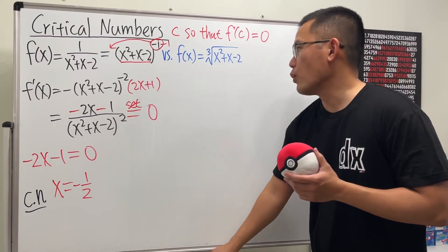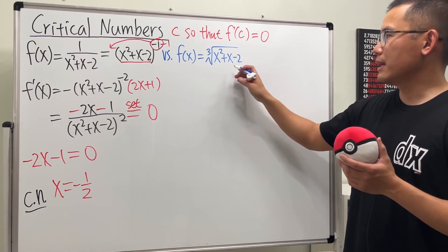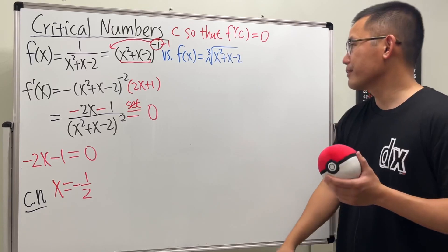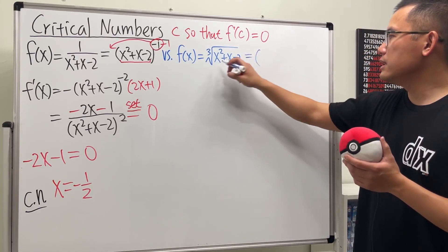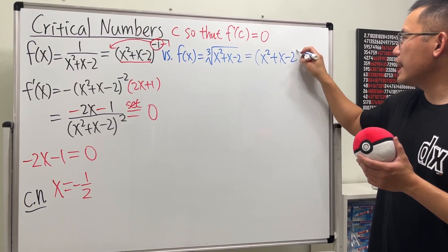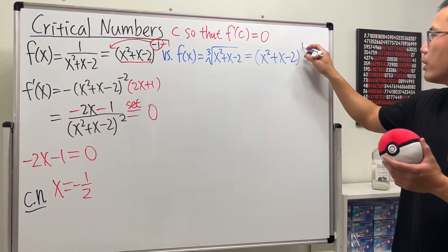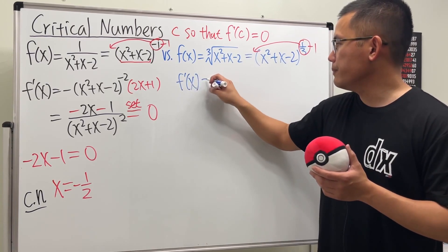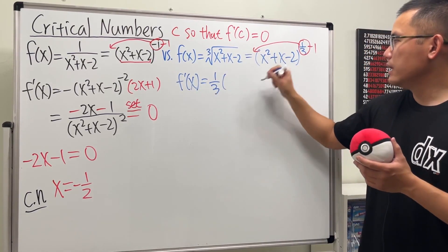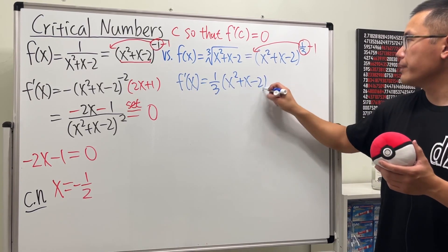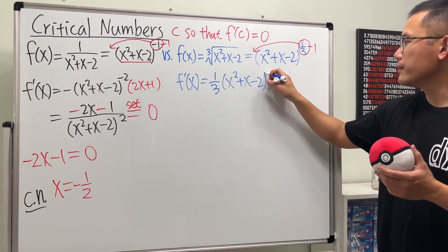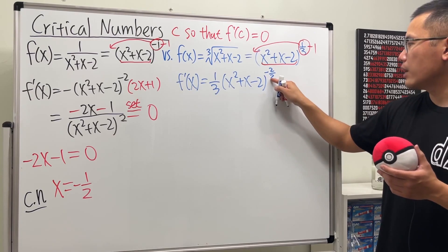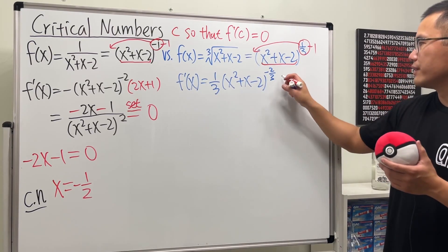Now let's look at the second function: the cube root of (x² + x - 2). I used the same inside function on purpose. We rewrite it as (x² + x - 2) to the 1/3 power, apply the power rule to get one-third times (x² + x - 2) to the negative 2/3, then apply the chain rule, multiplying by the derivative of the inside, which is (2x + 1).